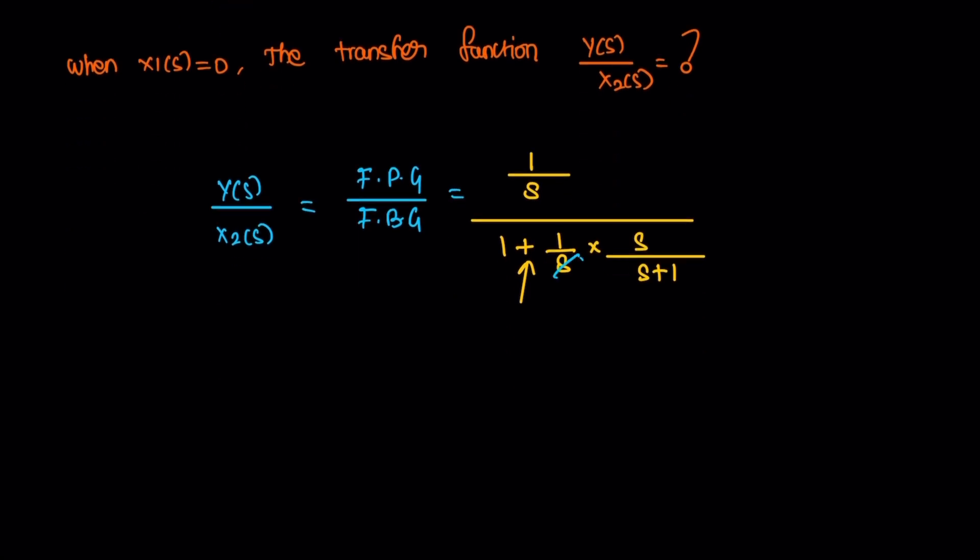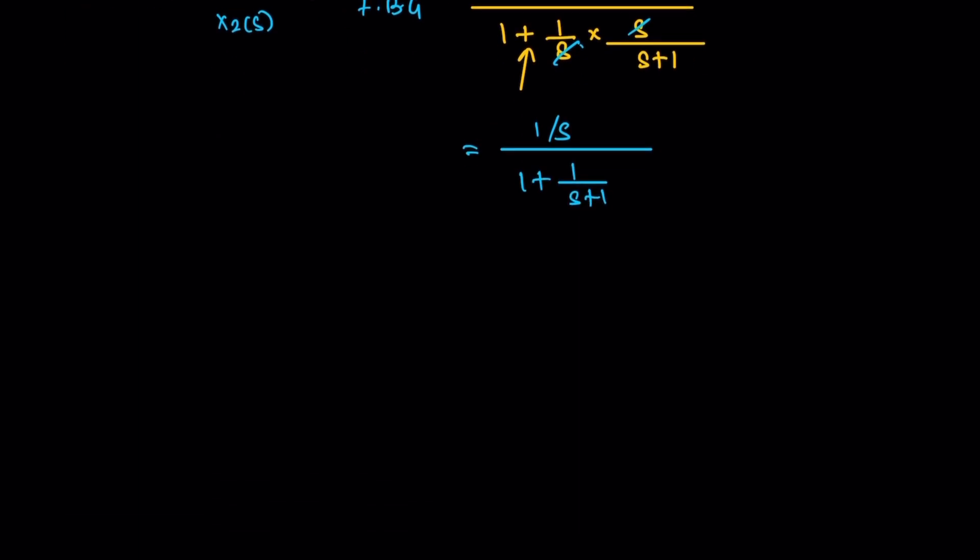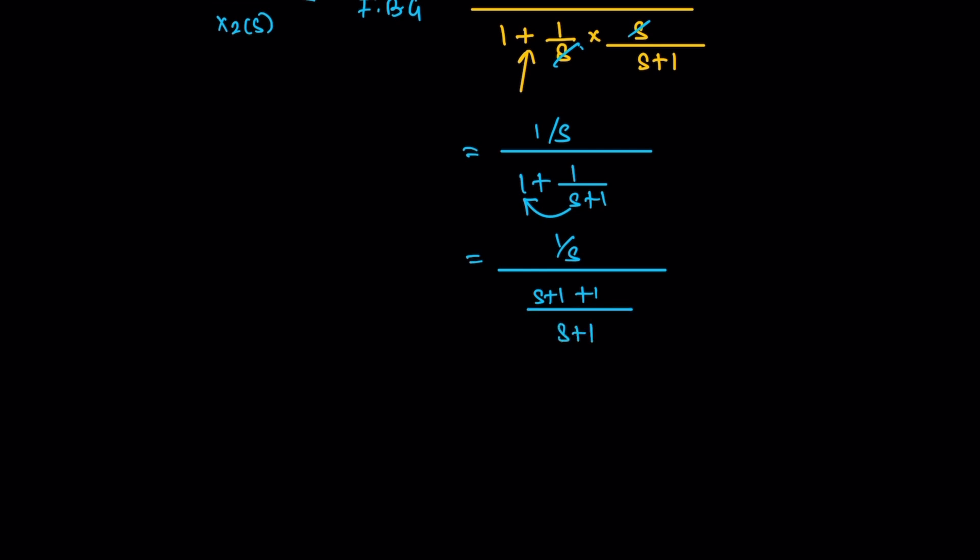Just cancel the s and 1 by s divided by 1 plus 1 divided by s plus 1. So for here, 1 by s divided by, so this one is just like a cross multiplication, we need a common denominator, s plus 1 plus 1 divided by s plus 1.